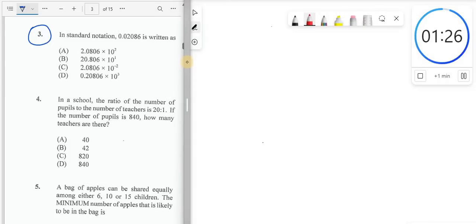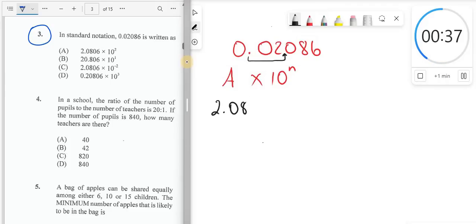Now question 3. In standard notation, we have the number 0.02086. Now I want to write this number in standard notation. Another name for scientific notation, also called standard form. It must be written as a number between 1 and 10, multiplied by a power of 10. Now, where would we put the point? So this number, 0.02086, becomes a number between 1 and 10. Well, we'll put the number after the first non-zero digit. It will now be 2.086.